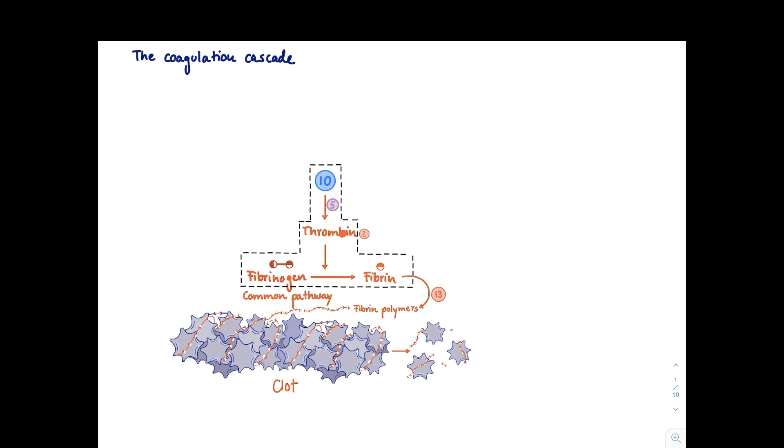So thrombin does this cleavage of fibrinogen to fibrin. How is thrombin activated? Thrombin is activated by factor 10. So factor 10 activates thrombin and then thrombin can do the final cleavage of fibrinogen to fibrin. And actually there's a cofactor also necessary. It's factor 5. So you go 10, 5, 2, 1.